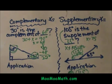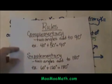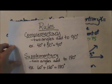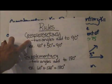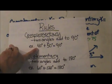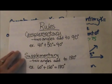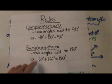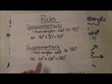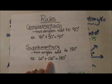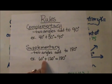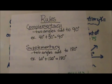So let's look at the rules of supplementary and complementary. Complementary are two angles that add to 90. Here is our example. 40 plus 50 is 90 so 40 and 50 are complements. And supplementary angles. Two angles that add to 180. 60 plus 120 is equal to 180. So 60 and 120 are supplements of each other.